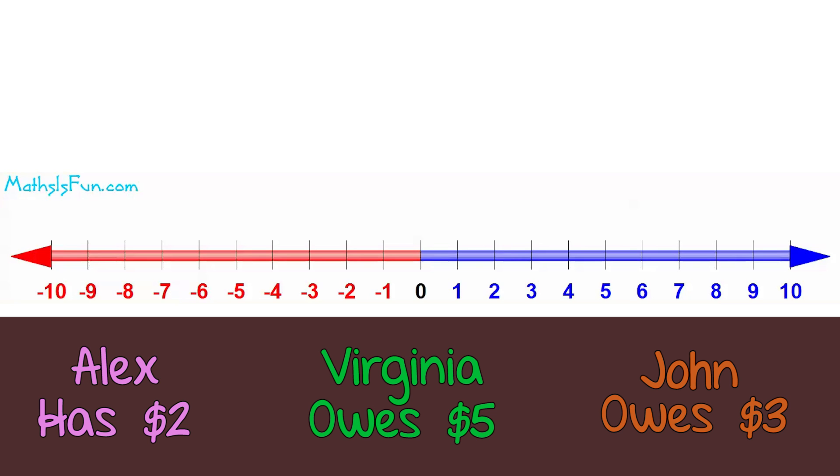Having money in your pocket is positive, so Alex is plus 2. But owing money is negative, so Virginia is negative 5 and John is negative 3.